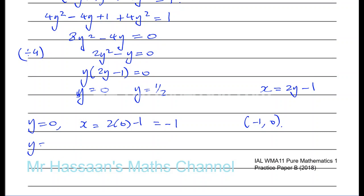Then you've got when y is equal to a half, which is positive a half, x is equal to 2 times a half minus 1, or 2 times a half is 1, 1 minus 1 is 0. So that's the point 0 and a half. So when y is 0, x is minus 1. When y is a half, x is 0. And you have your solutions to this equation.